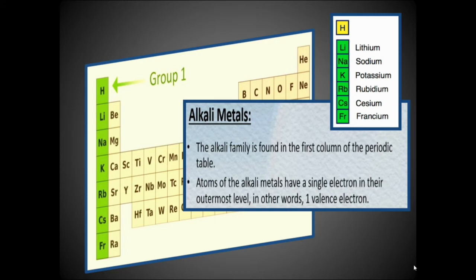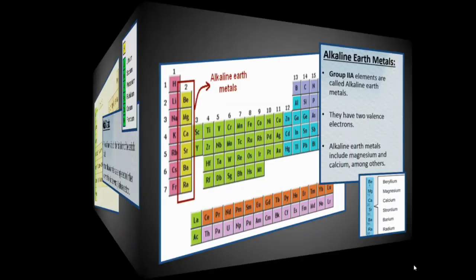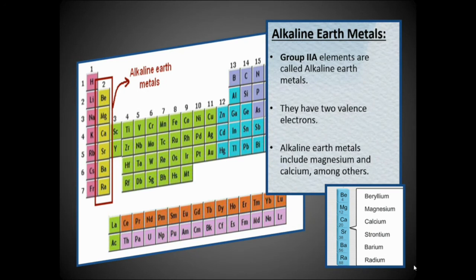The alkali metal family has atoms with a single electron in their outer shell — in other words, one valence electron. The alkaline earth metals are Group 2A elements. Their members are beryllium, magnesium, calcium, strontium, barium, and radium, and they have two valence electrons.